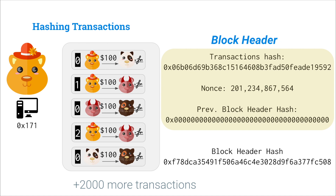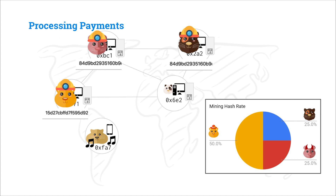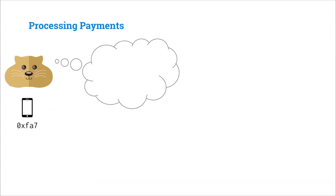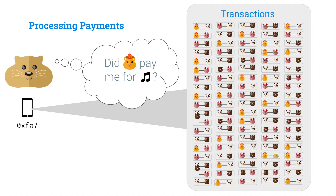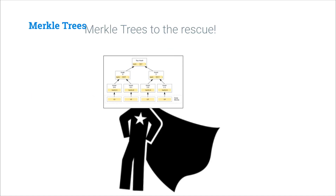But Bitcoin doesn't actually just use a hash of transactions. Consider the following example. Let's say we have this tan gerbil that only has a smartphone and wants to connect to the Bitcoin network in order to sell music. Our tan gerbil will connect to Alice and Jing as peers. Alice wants to buy some music, so Alice has to send proof to the tan gerbil that she paid her on the Bitcoin blockchain. The tan gerbil asks, 'Did Alice pay me for this song?' and would have to hash thousands and thousands of transactions to verify — but her smartphone is very bad at computing hashes. But don't worry, Merkle tree is to the rescue!